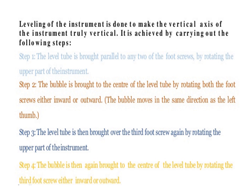Leveling of the instrument is done to make the vertical axis of the instrument truly vertical. It is achieved by the following steps. First, the level tube is brought parallel to any two foot screws by rotating the upper part of the instrument. Then the bubble is brought to the center of the level tube by rotating both foot screws either inward or outward. Then the level tube is placed over the third foot screw, and by rotating the third foot screw the bubble is brought to center. Once brought to center, the telescope is placed over the first two foot screws again to check whether the bubble is at center. If it is, then the instrument is considered leveled.